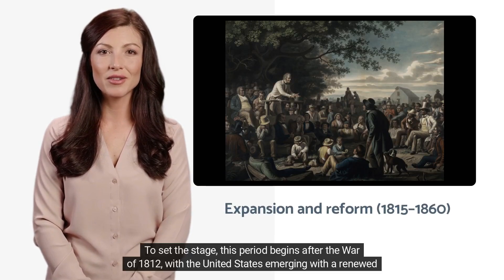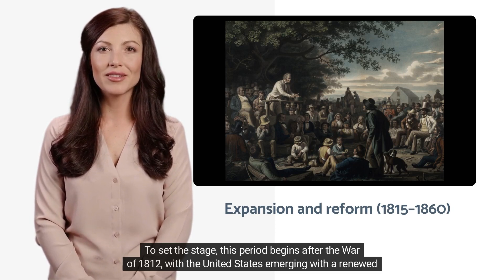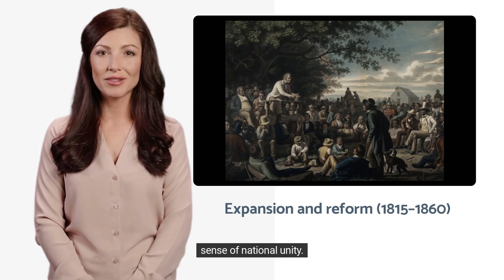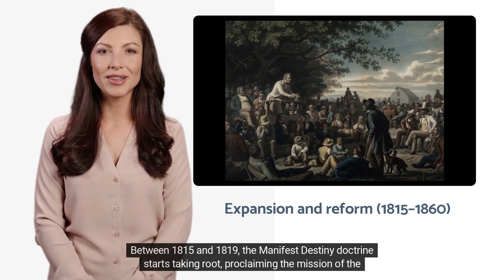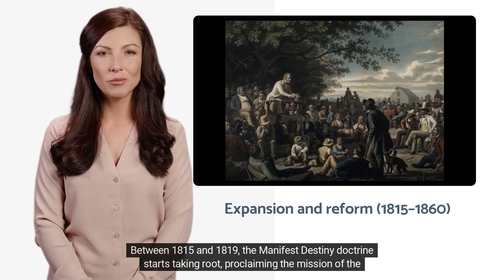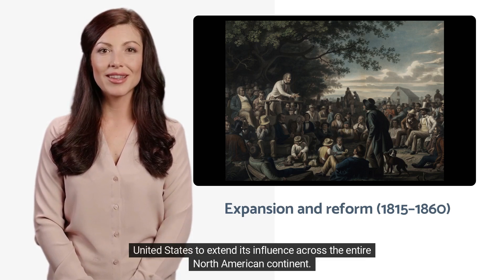To set the stage, this period begins after the War of 1812, with the United States emerging with a renewed sense of national unity. Between 1815 and 1819, the Manifest Destiny doctrine starts taking root, proclaiming the mission of the United States to extend its influence across the entire North American continent.